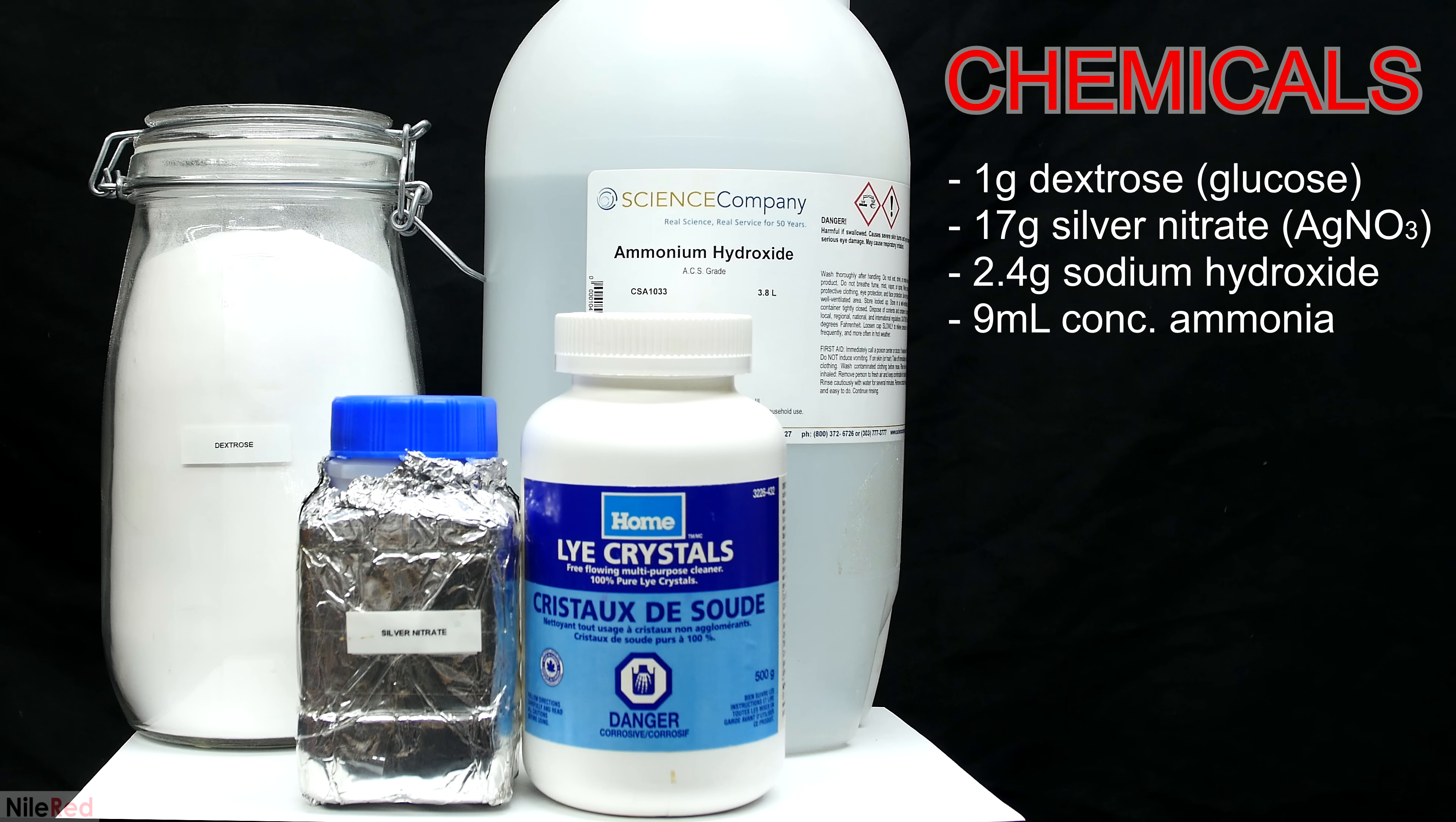The sugar and the sodium hydroxide were purchased locally, but the ammonium hydroxide had to be purchased online. Ammonium hydroxide is pretty much just super strong ammonia cleaner. It's likely that it can be replaced by the more dilute stuff you find in stores, but I've never tried it personally. It might be possible to buy the silver nitrate online, but I just made it myself by reacting silver metal with concentrated nitric acid.